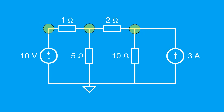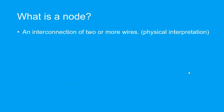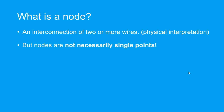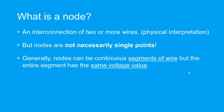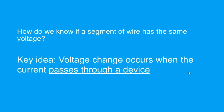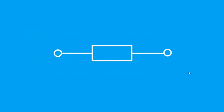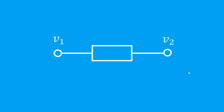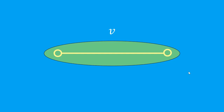The remaining nodes are trickier to identify. Although nodes are interconnections between two or more wires, that's a physical interpretation. In reality, nodes are not necessarily just single points — nodes can even be continuous segments of wire, but they must have the same voltage value. The key idea is that voltage change occurs when current passes through a device. For example, if a resistor is connected to wires, there must be a voltage drop across it for current to flow, so each end of the resistor has a different node voltage. However, if you just have a length of ideal wire with no device, there is no voltage drop, so the entire segment has the same voltage value.